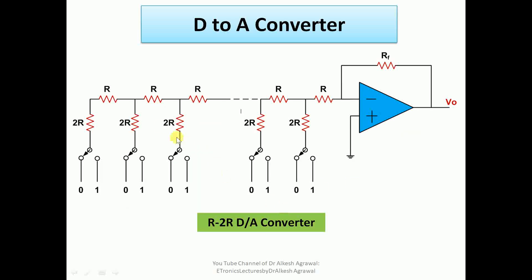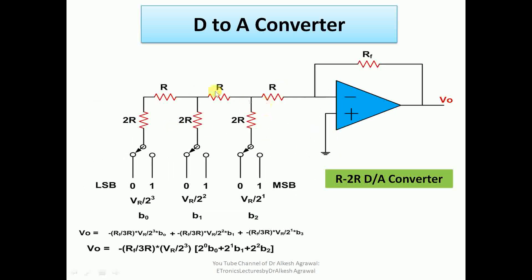Next is the R2R digital to analog converter. It is called R2R because the resistance values follow an R-2R pattern throughout: R-2R, R-2R, R-2R, and so on. We again use the inverting mode summing operational amplifier. For a three-bit example, the configuration has R-2R sections for each bit, with LSB at one end and MSB at the other, and each terminal selects 0 or 1.